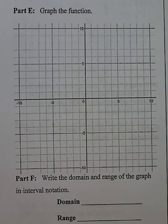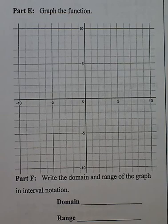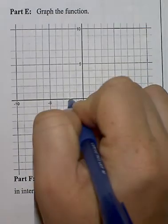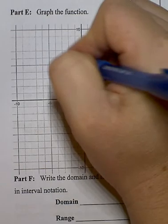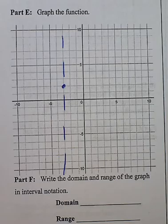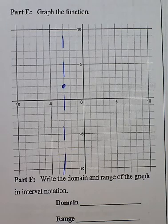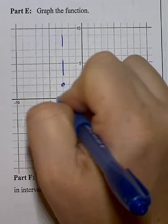I'm going to start by graphing the vertex of negative 3, 2. So negative 3, 1, 2, 3 and up 2. I know that your line of symmetry is going to go through here. And I know that we have x-intercepts at negative 4 and negative 2.